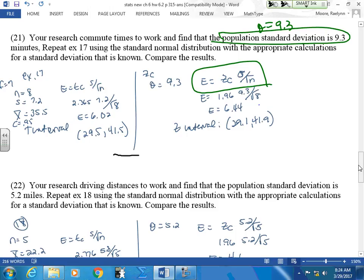So when we set up this interval, the mean is not going to change. The mean is, what was your mean? 35.5. Here's your Z score. Here's your Z score. 29.1 to 41.9. This is my Z score.